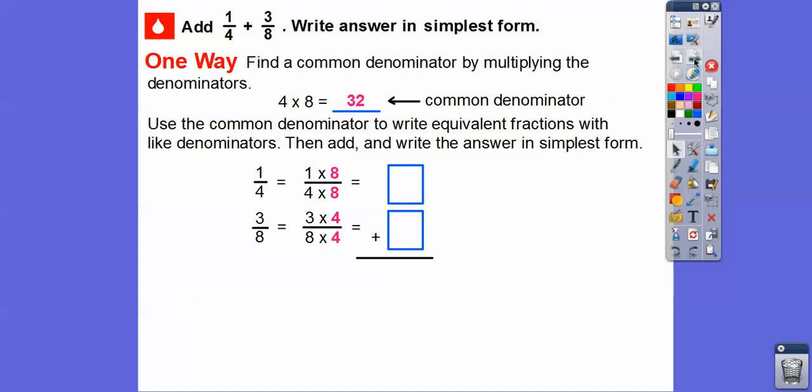We're going to multiply each fraction times one. Here's one, eight over eight. Any number over itself equals one. And when you multiply it by one, it won't change the value. So we multiply this one by eight over eight because four times eight will give us 32 for the denominator. And one times eight will be eight.